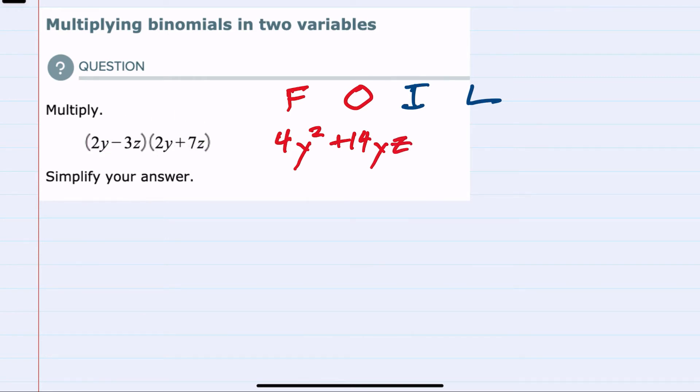Switching to the inner, we have a minus 3z and a 2y. And when they're multiplied, minus 3 times 2 is a minus 6. The z times the y, again, can't be combined.